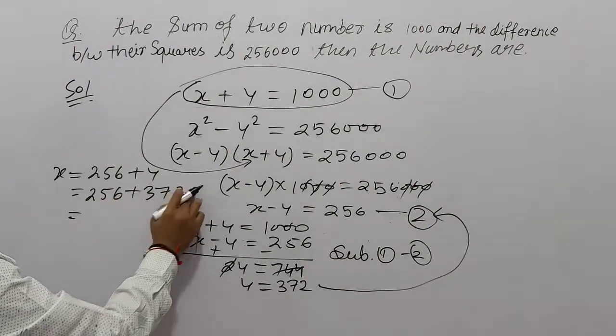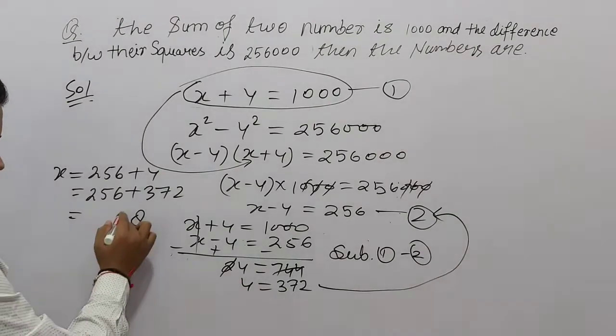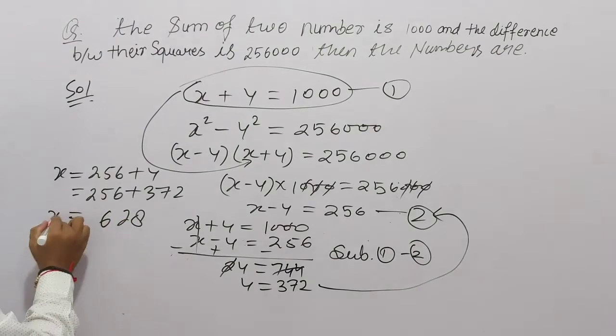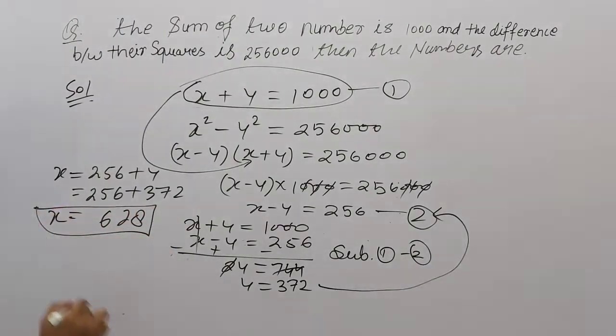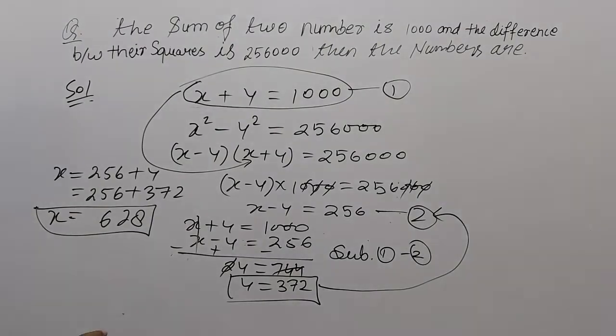So, यह कितना होगा? 6, 2 कितना हो जाएगा? 8 and 7 and 5. 12 carry 1 and 3, 2. 5, 1, 6. So, x हो गया आपका 6, 28 and y is the 3, 7, 2. Okay?